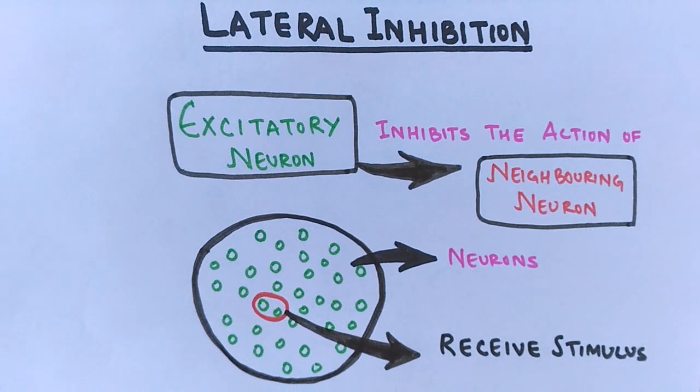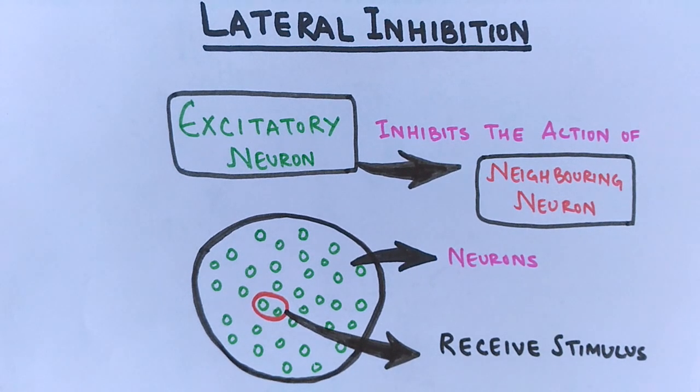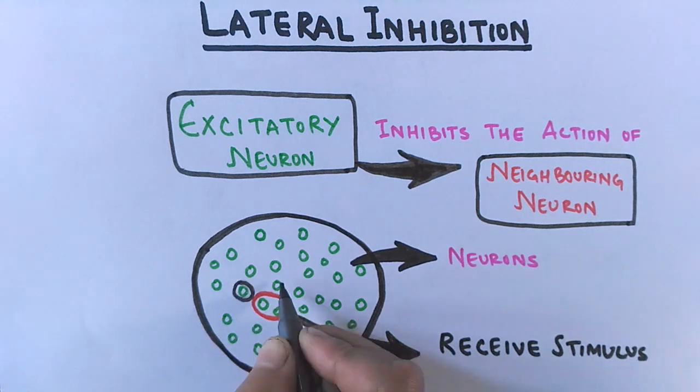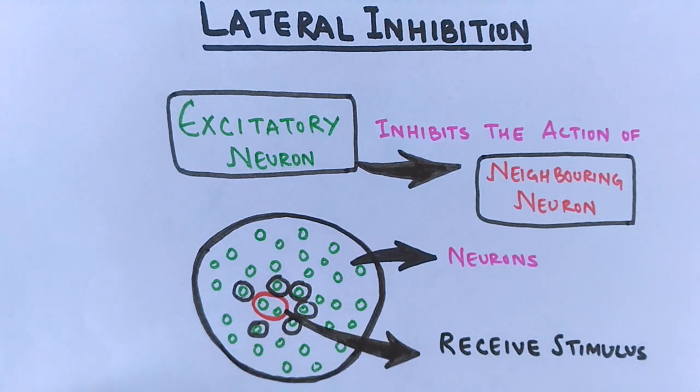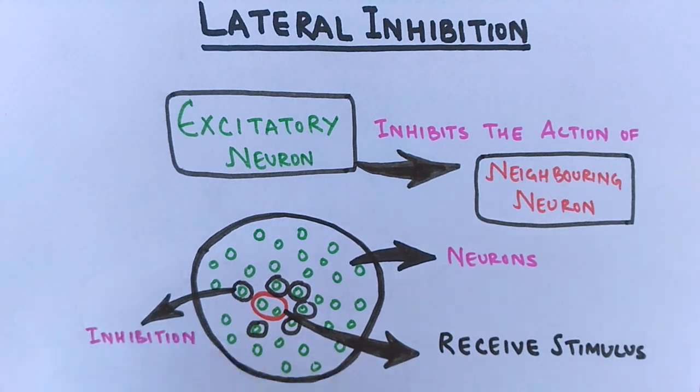We can see the point of stimulation affects two neurons more specifically, but there are also other neurons, the surrounding neurons, which can also receive the same stimulus but with less stimulation. And it's here where lateral inhibition comes into play.